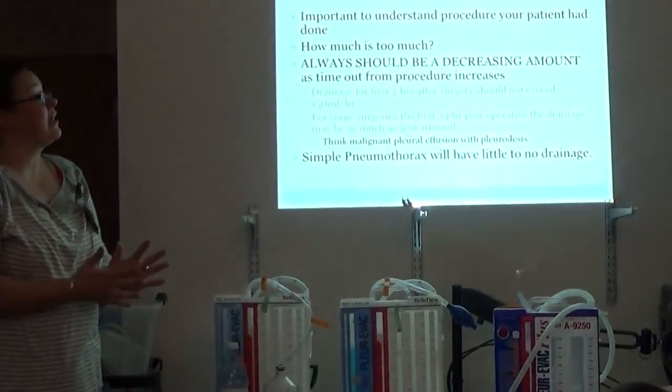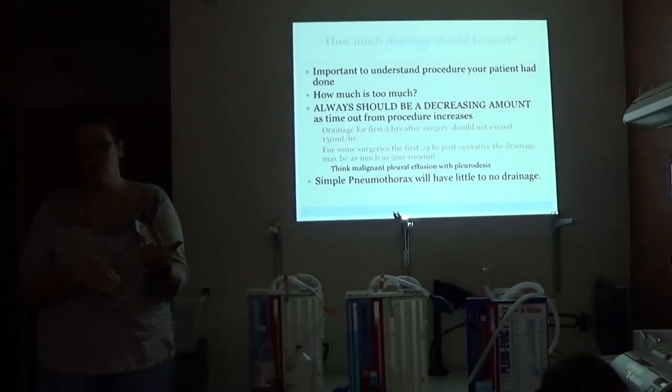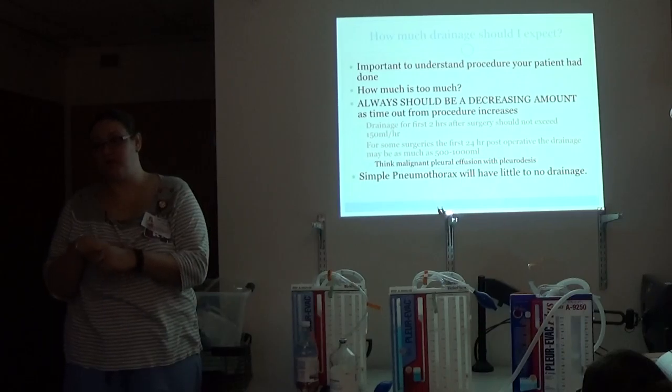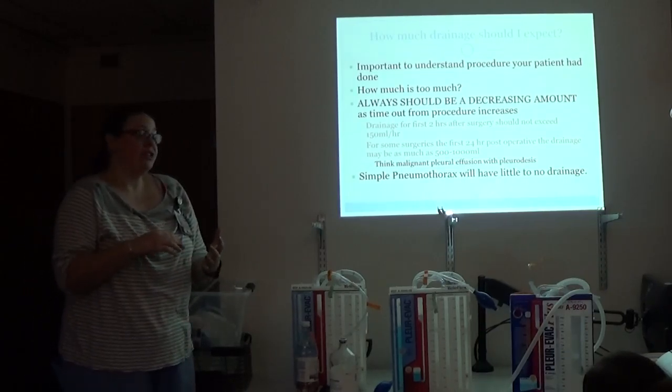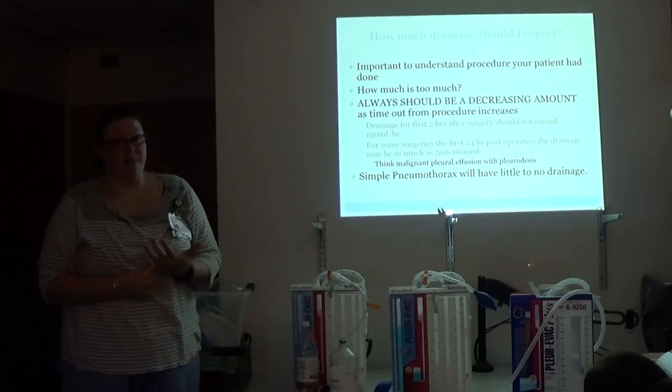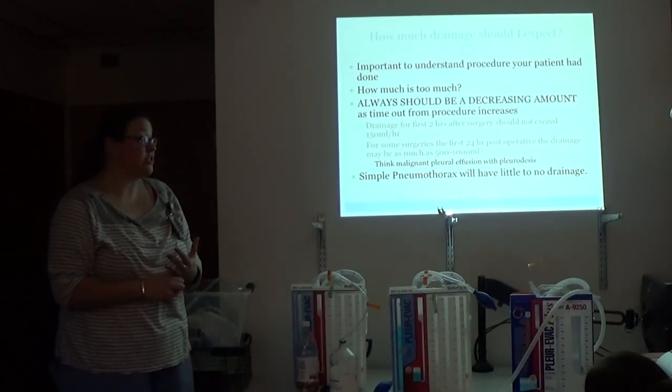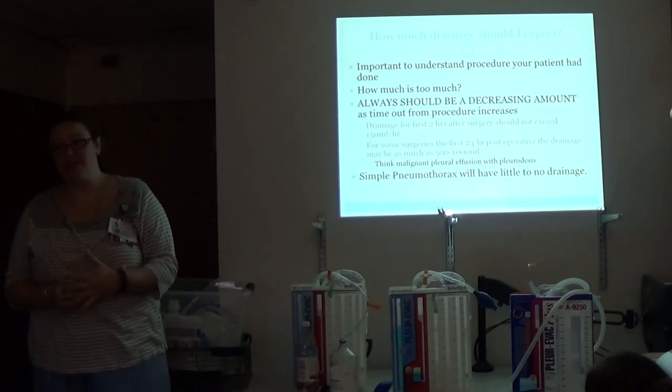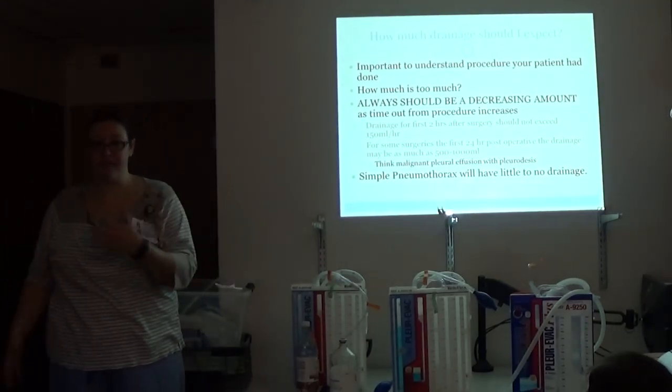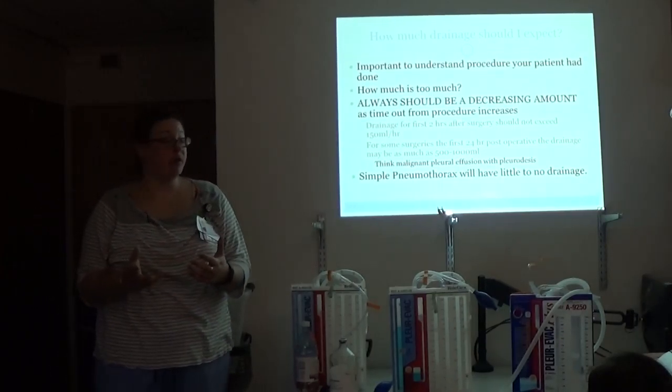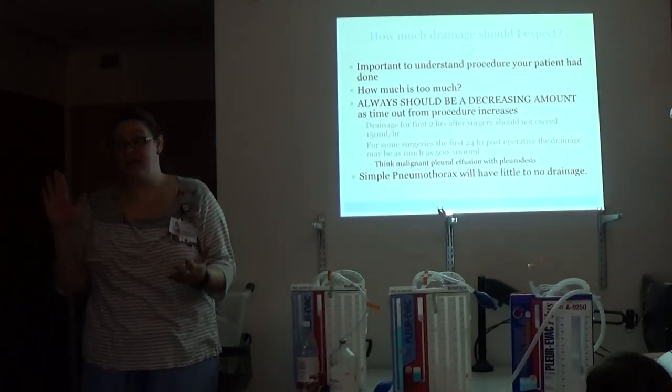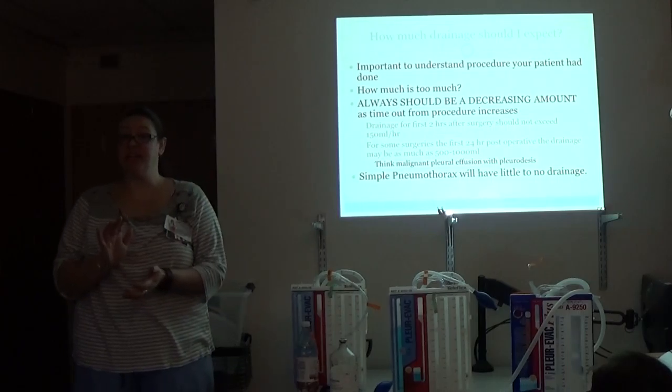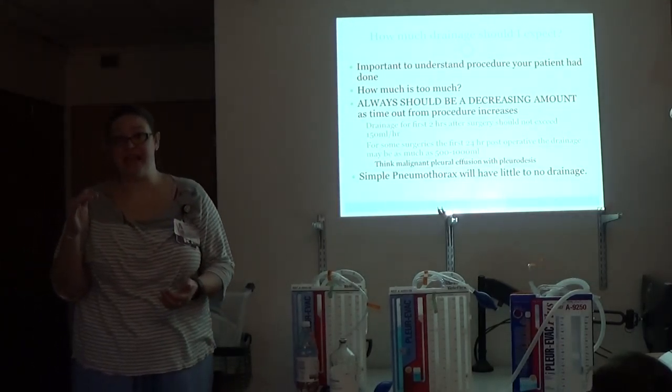So how much drainage should you expect? Again, it's important to know, are you dealing with air or are you dealing with fluid? How much is too much? It should always be a decreasing amount of drainage from the time that your procedure happens. So after your first two hours after surgery, it really shouldn't exceed 100 mLs an hour. And for some surgeries, though, the first 24 hours postoperative, it may be as much as 500 to 1,000 mLs. Think about a patient who had a loculated empyema in there. We have to evacuate all of that, or somebody who might have had a malignant pleural effusion. A simple pneumo, so your guy who gets in an MVA, fractures a rib, doesn't have a hemothorax, but needs a chest tube, you're going to have very little to no drainage because what you're getting out is just air.